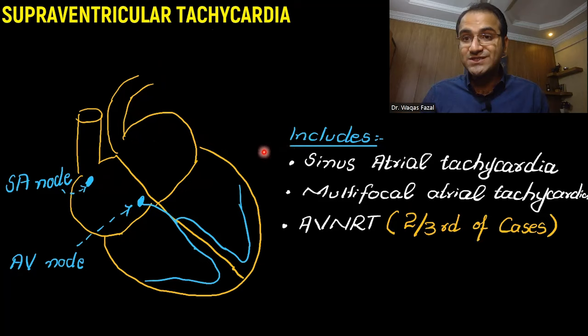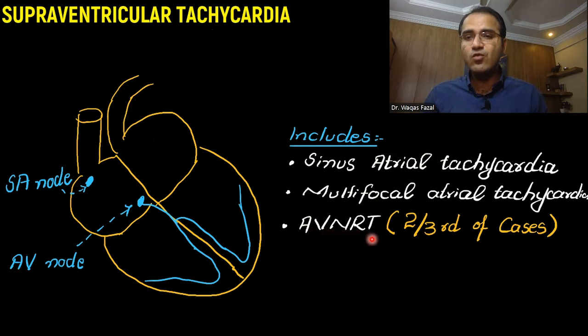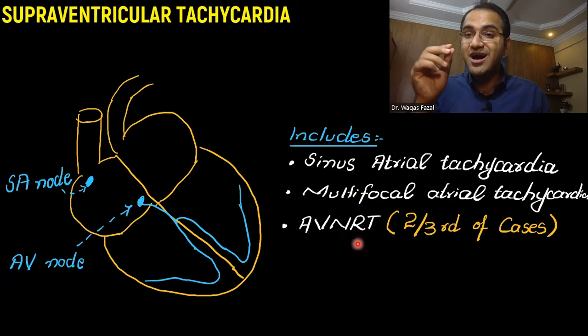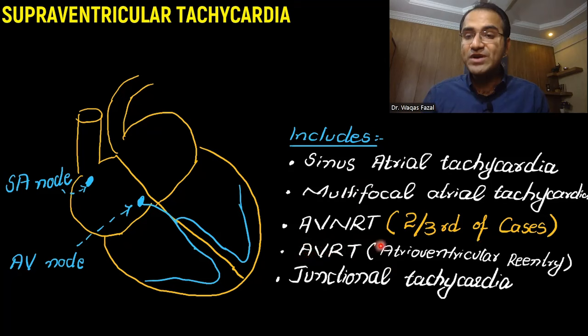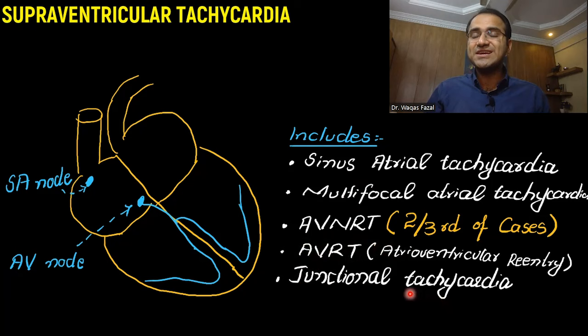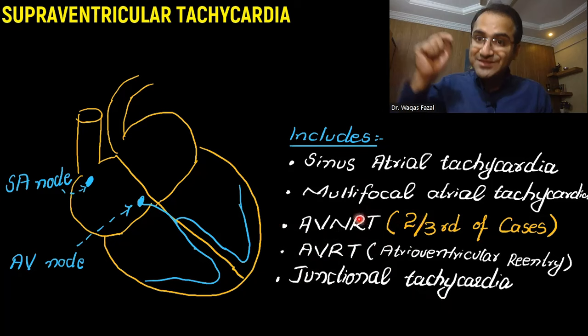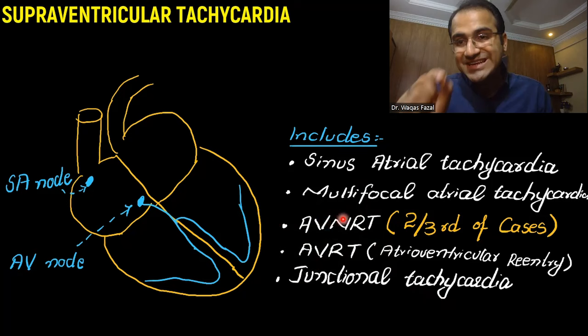Tachycardia generated in the sinus node, in the AV node, or in the atrial myocardium is called supraventricular tachycardia. It includes sinus atrial tachycardia, multifocal atrial tachycardia, AV nodal re-entrant tachycardia — which is the most common form, accounting for two-thirds of SVT cases — as well as atrioventricular re-entrant tachycardia and junctional tachycardia. In this video, we focus on AVNRT.